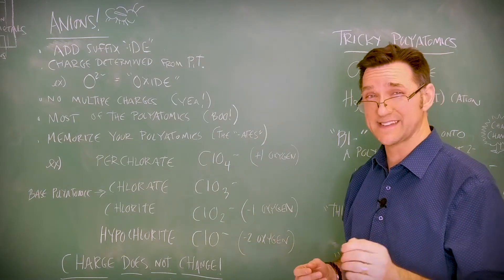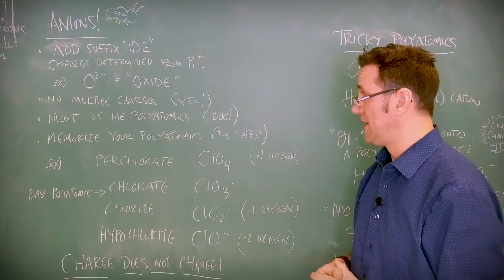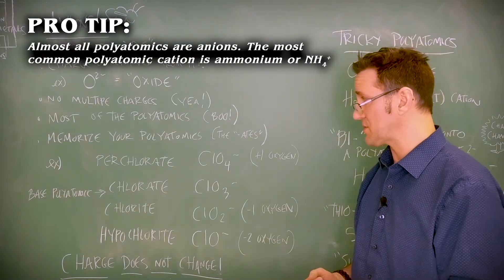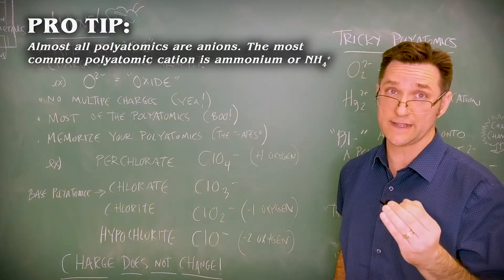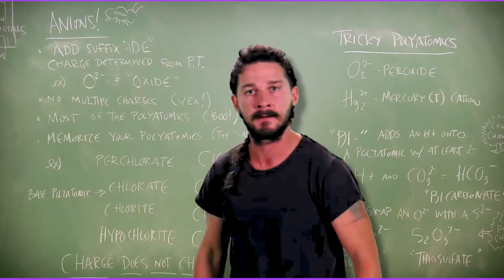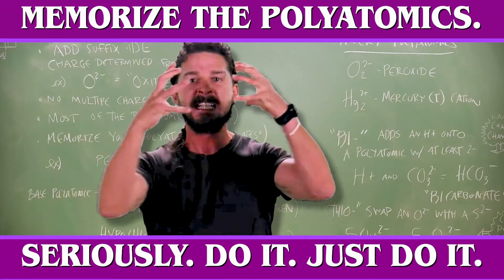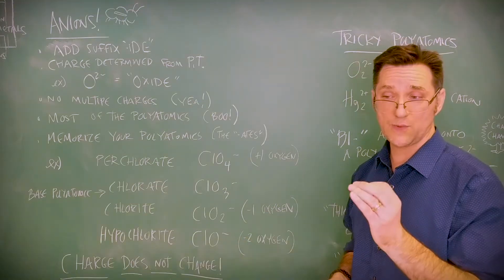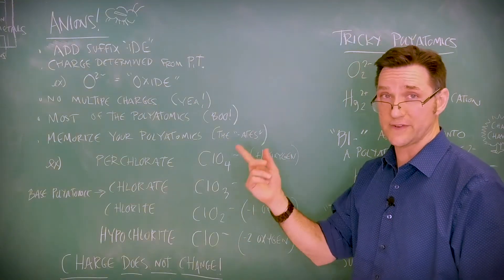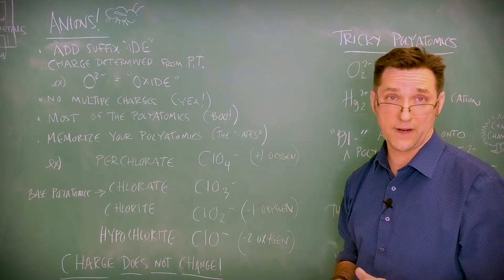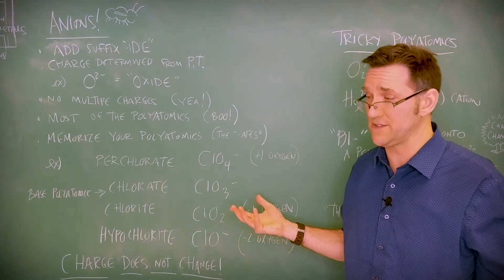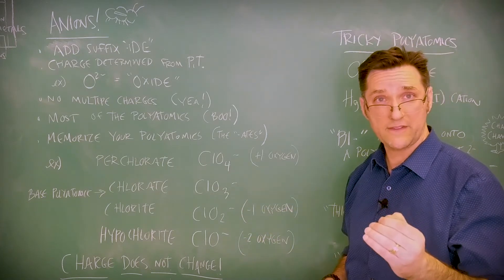The bad news about anions is that it contains most of our polyatomics. Polyatomics are the bane of the introductory chemistry student. Like the multiple charge cations, this is something you really should just take the time to memorize. Just do it. What are you waiting for? Do it! Really, all you have to do is memorize the -ates. Each one has a different number of oxygens and a different charge.